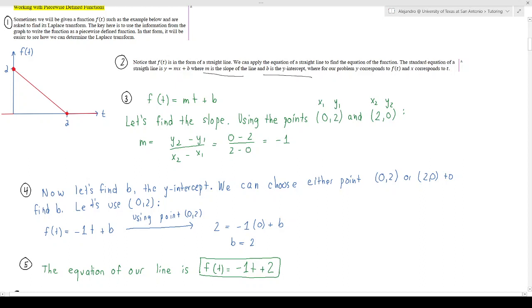In our case instead of y we have f(t) and instead of x we have t, so that's why we put it in this form to stay consistent. We can find the slope, we have two points given to us: (0,2) and (2,0), and that's found by inspecting the graph and we find the slope to be -1.